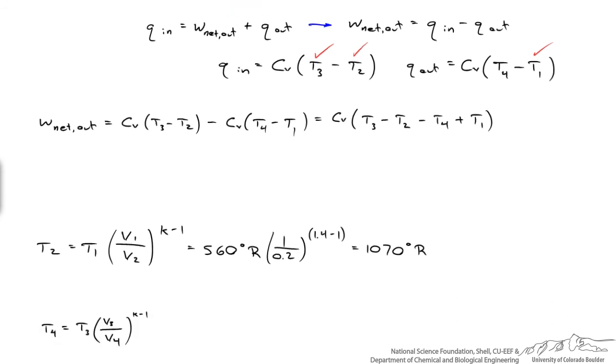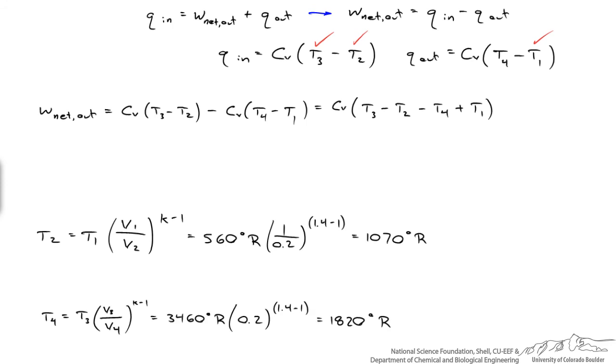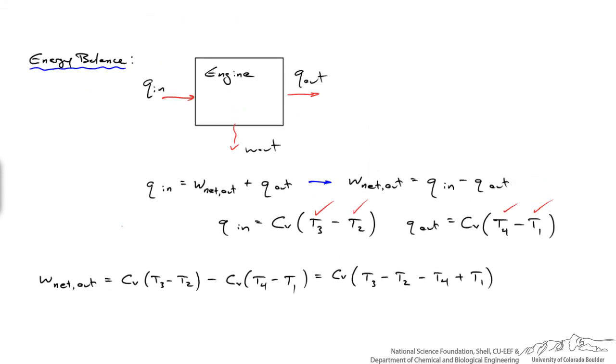Similarly, I can write an expression for T four based on T three. And if I plug in values for T four, I come up with a temperature of eighteen hundred and twenty degrees Rankine. Now incidentally, this ratio, this one over point two, and this value of point two, is based on the fact that the volume at state two is only twenty percent of the volume at state one, which was specified in the problem statement.